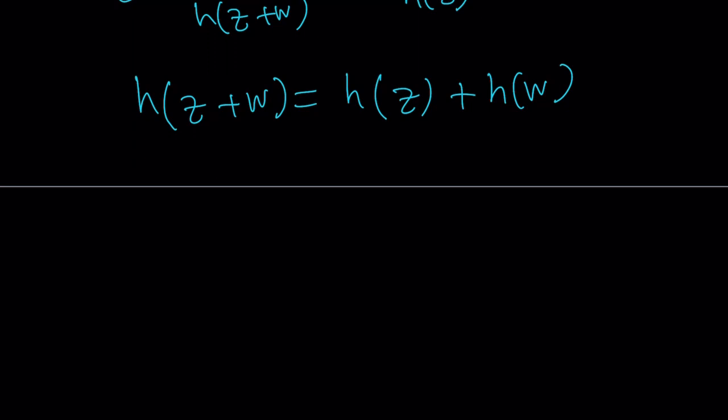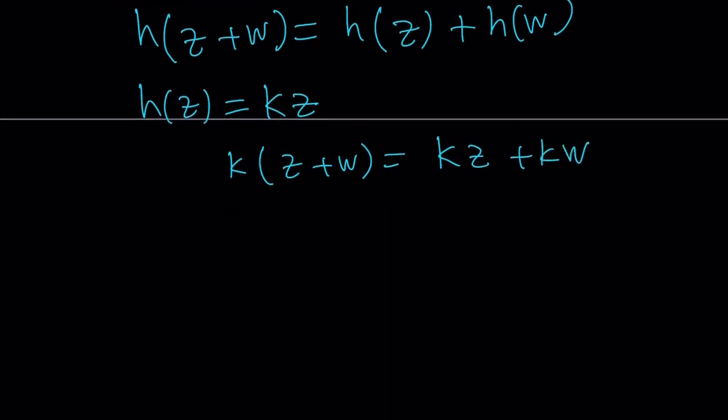Of course, needless to say, these functions are continuous, well defined, so on and so forth. Any function that satisfies this equation is like k times the variable. So it is a linear function with y-intercept zero. It goes through the origin. k times z plus w is the same thing as kz plus kw. Now, let's back substitute everything. We got the result, but we're not looking for h. h z is equal to k z.